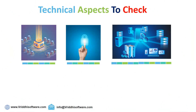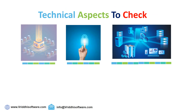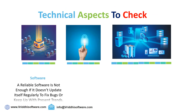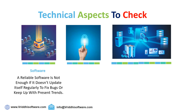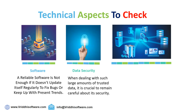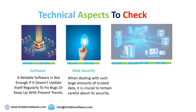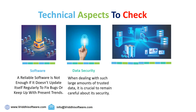Technical aspects to check for. Software: ensure that the company provides a security patch for software security along with regular software updates and future suitability. A reliable software is not enough if it doesn't update itself regularly to fix bugs or keep up with present trends. Data security: understand where your data will be stored and who will be able to own and access it. When dealing with such large amounts of trusted data, it is crucial to remain careful about its security.